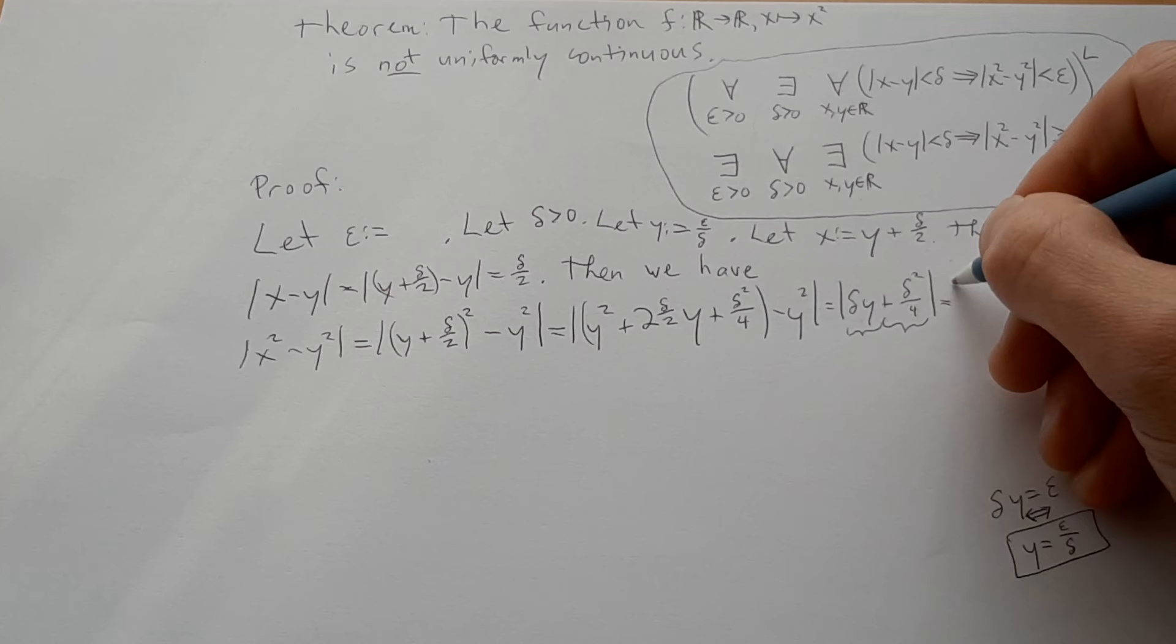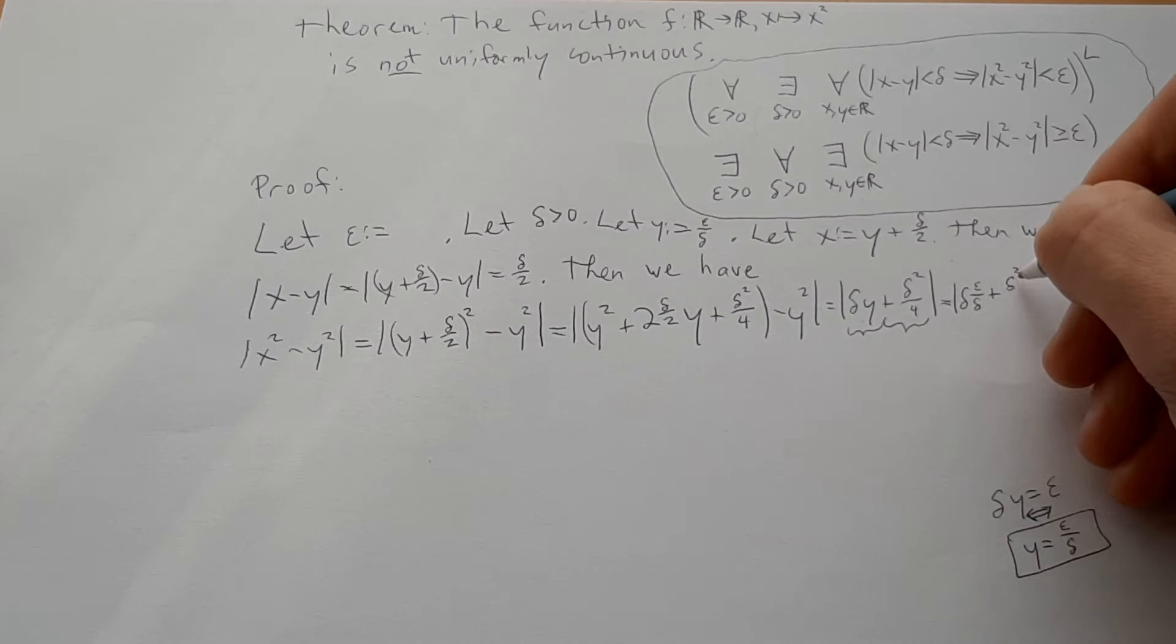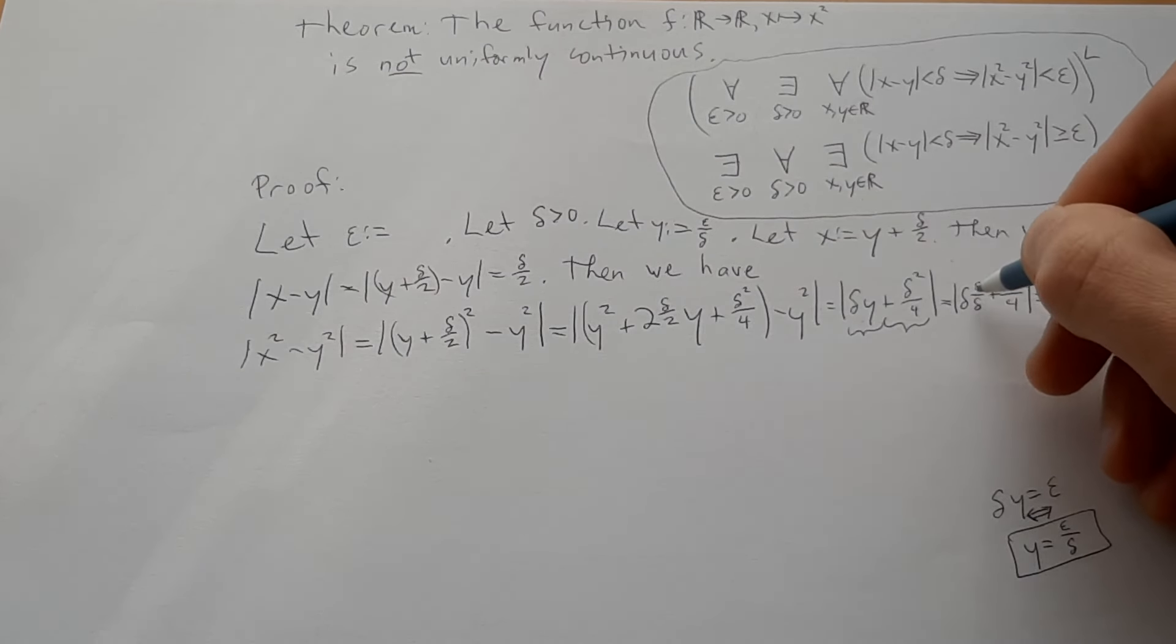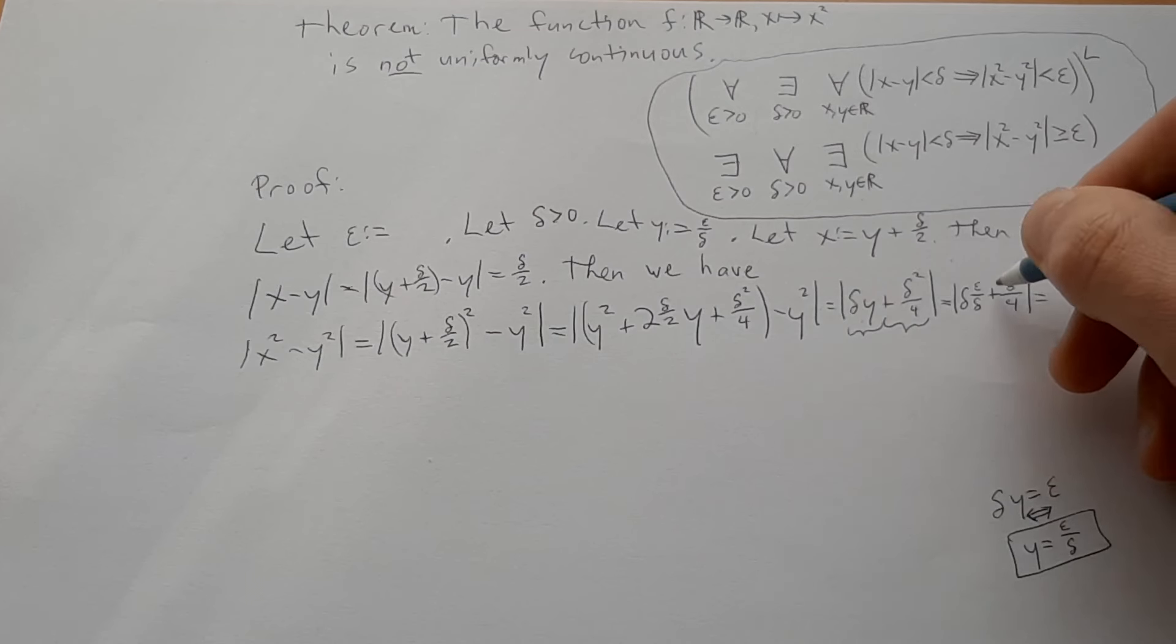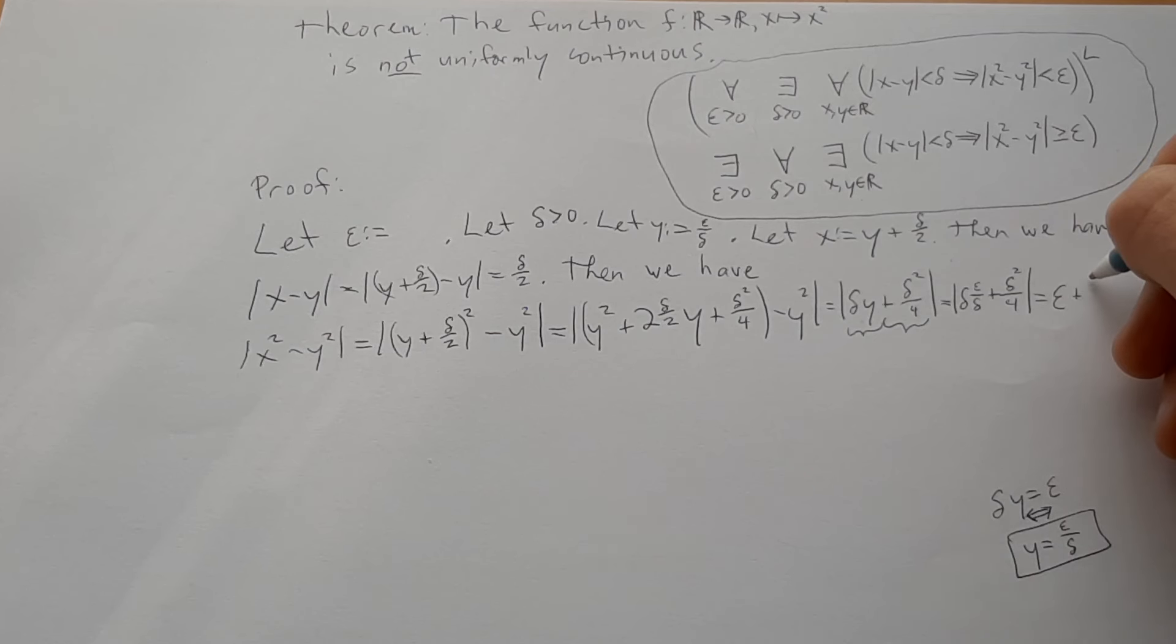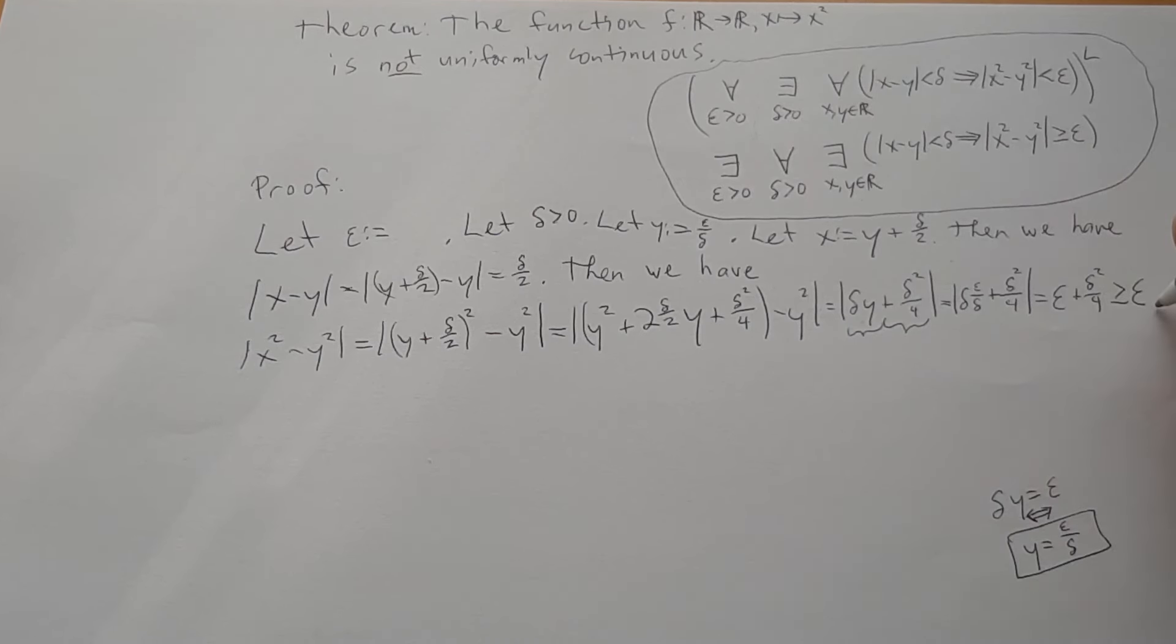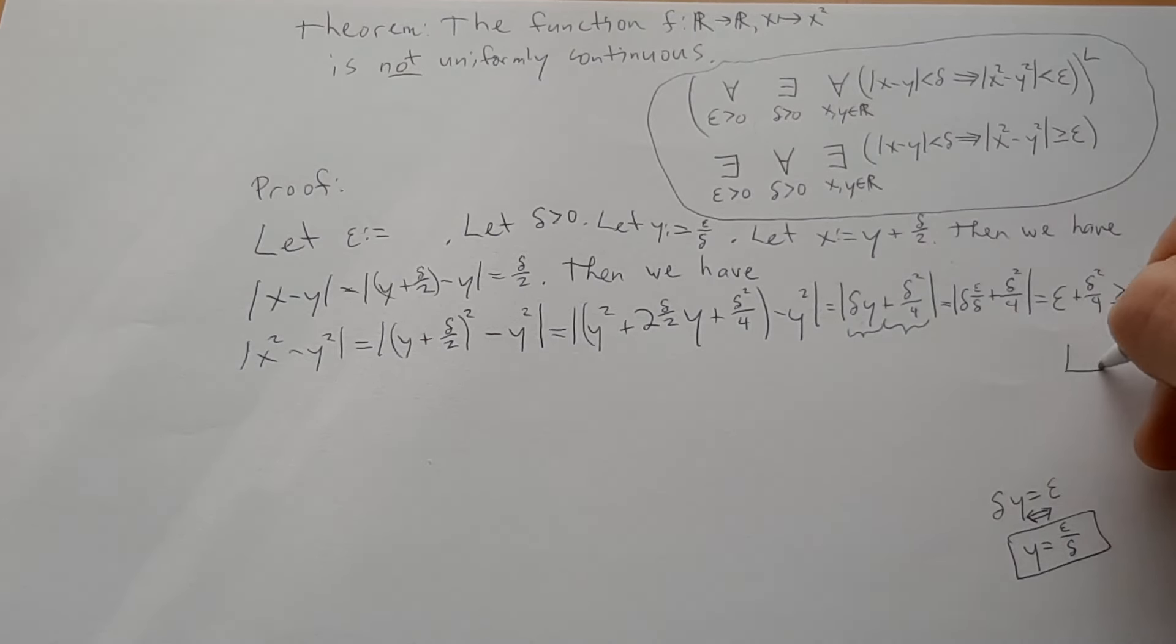And if we do sub that in, then we have delta epsilon divided by delta plus delta squared over four. Okay, so the deltas are going to cancel out. We get our epsilon. So then we just have epsilon plus delta squared over four. Well that's all positive, so we have epsilon plus delta squared over four, which obviously is greater than or equal to epsilon. And with that we are finished.